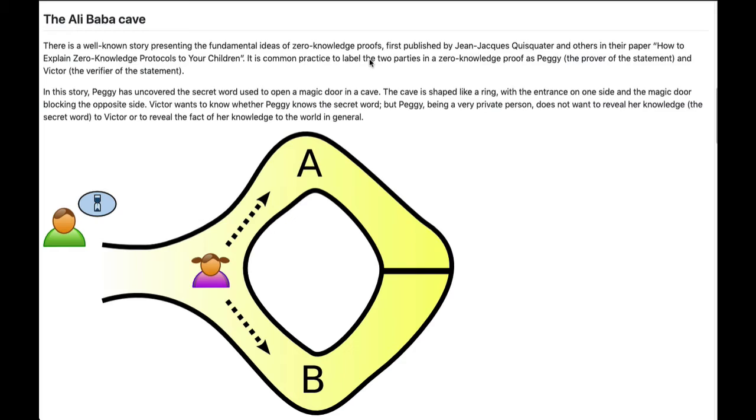There's a link there for the Wikipedia article on zero-knowledge proofs. The classic example is this Ali Baba's cave. Peggy, the prover, has found this magic cave.